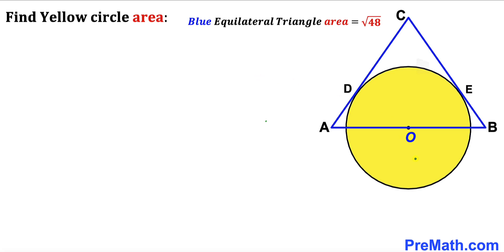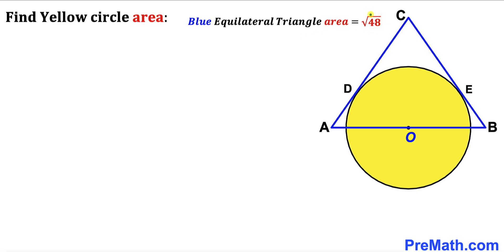Welcome to pre-math. In this video we have got a yellow circle with center O along with an equilateral triangle ABC, such that points D and E are the points of tangency. The area of this blue equilateral triangle has been given to us as square root of 48 square units, and our task is to calculate the area of this yellow circle.